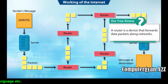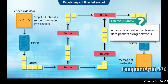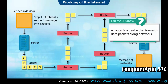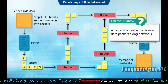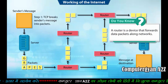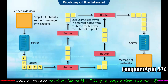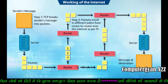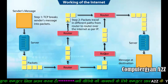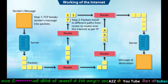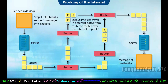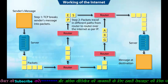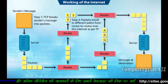Messages from a sender's computer are divided into small parts called packets. Each packet contains part of the message plus information on the sending and receiving machines and how the packet relates to other packets. Packets travel independently and possibly on different routes through the internet, and are reassembled into the message at the receiving machine. To make information flow smoothly and securely, every computer and network on the internet follows the same set of rules and procedures called protocols.